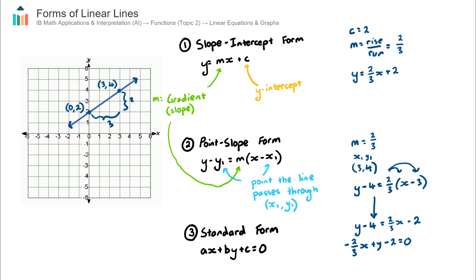We're nearly there. Pretty much all the time when a question asks to leave your answer in standard form, it requires the a, b, and c values to be whole numbers (integers). At the moment we have a fraction as the coefficient of x. A technique I like to use to remove the fraction is to multiply every term in the equation by the denominator. Since we have just one fraction, I can multiply the whole equation by 3. This becomes negative 2x plus 3y minus 6 equals 0. And there we have it — the equation of this blue line in standard form.